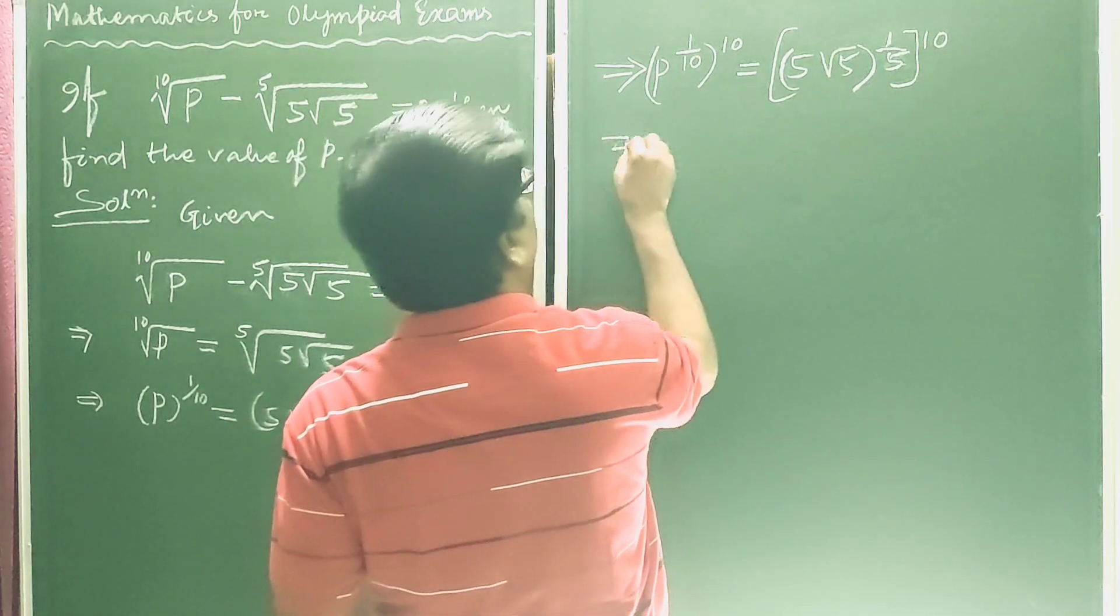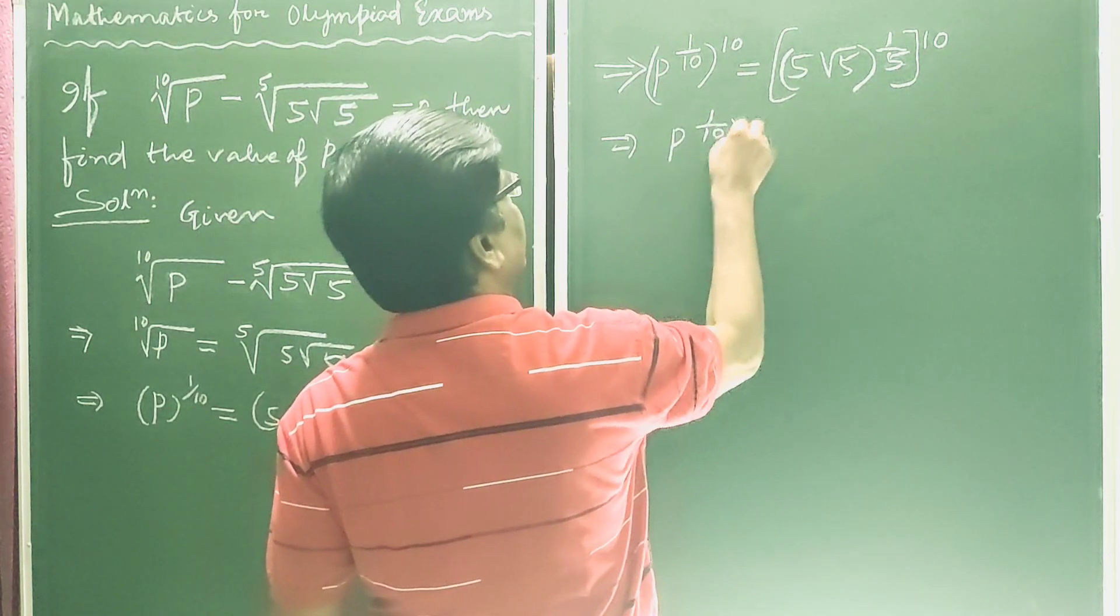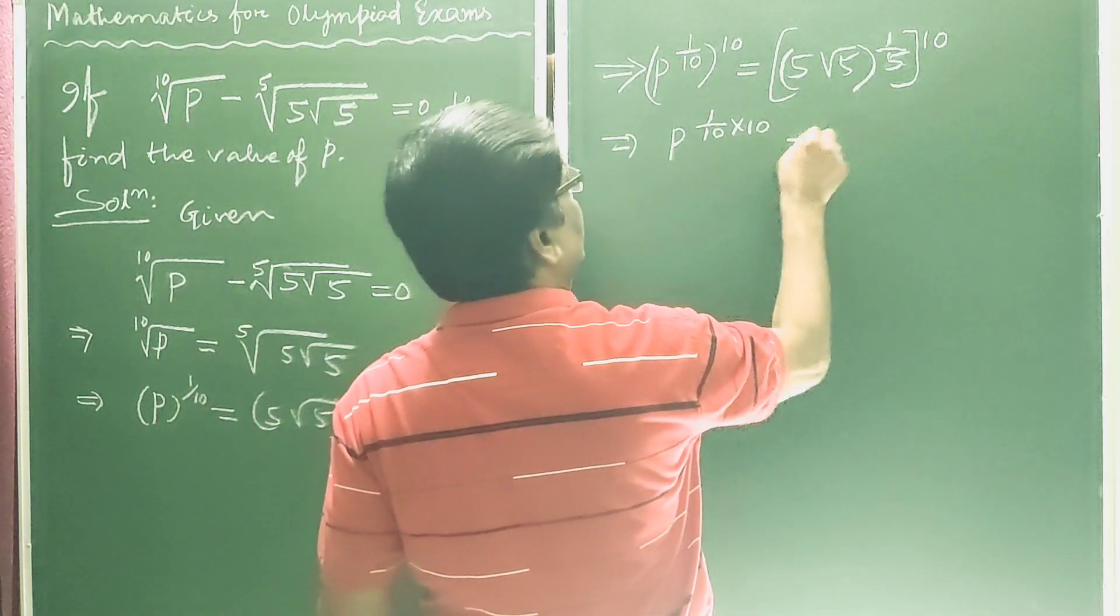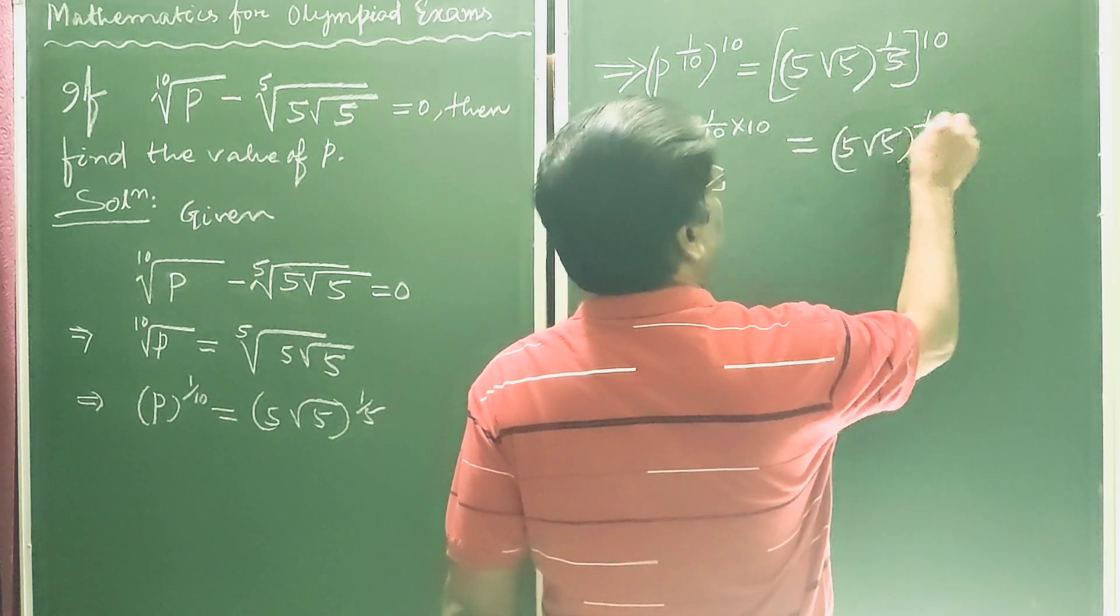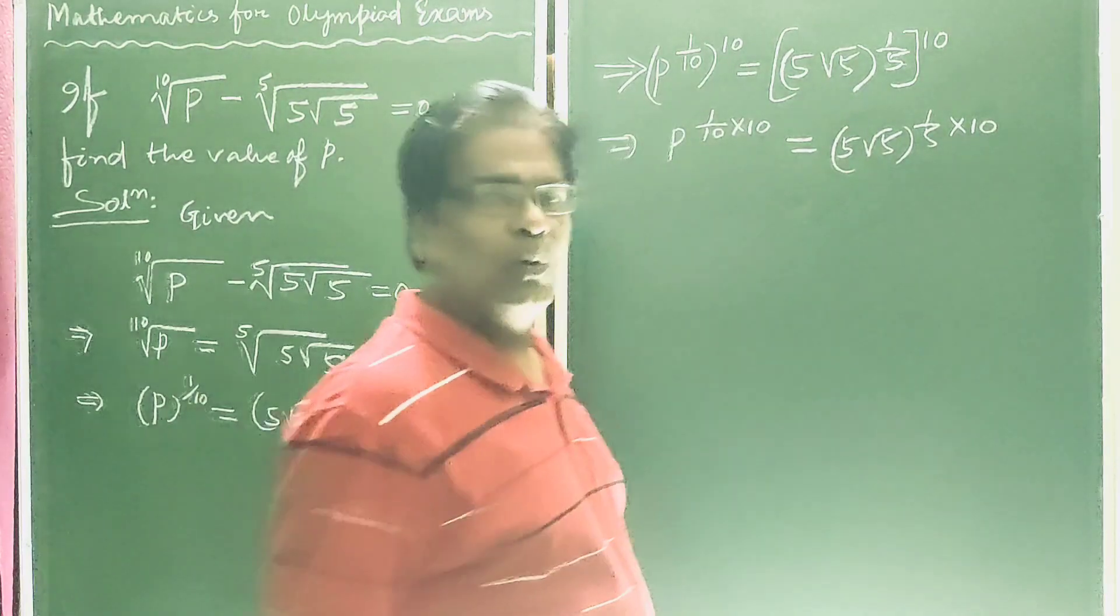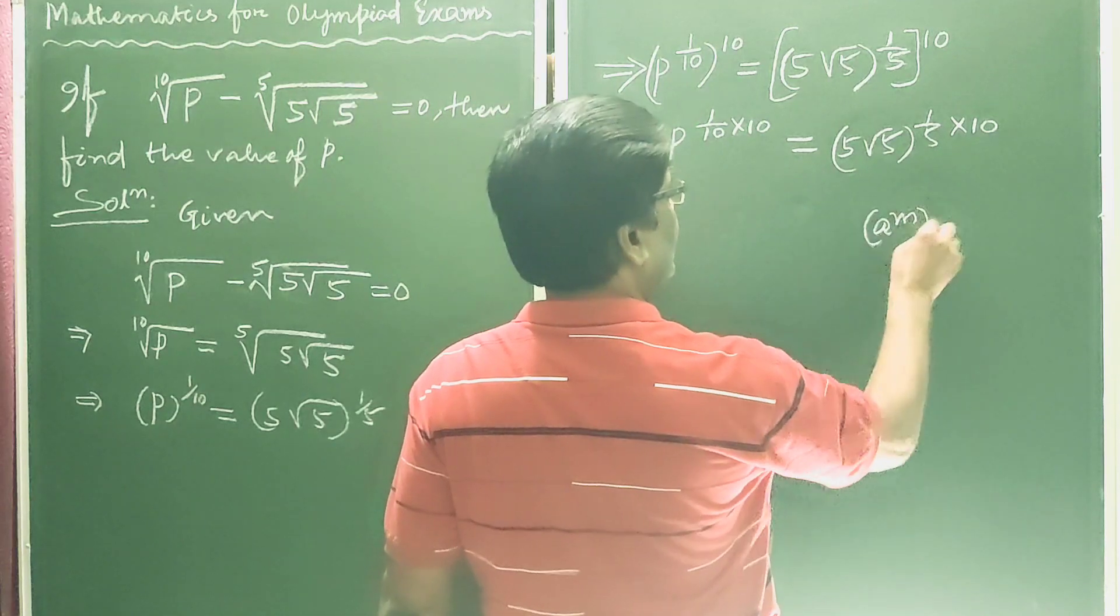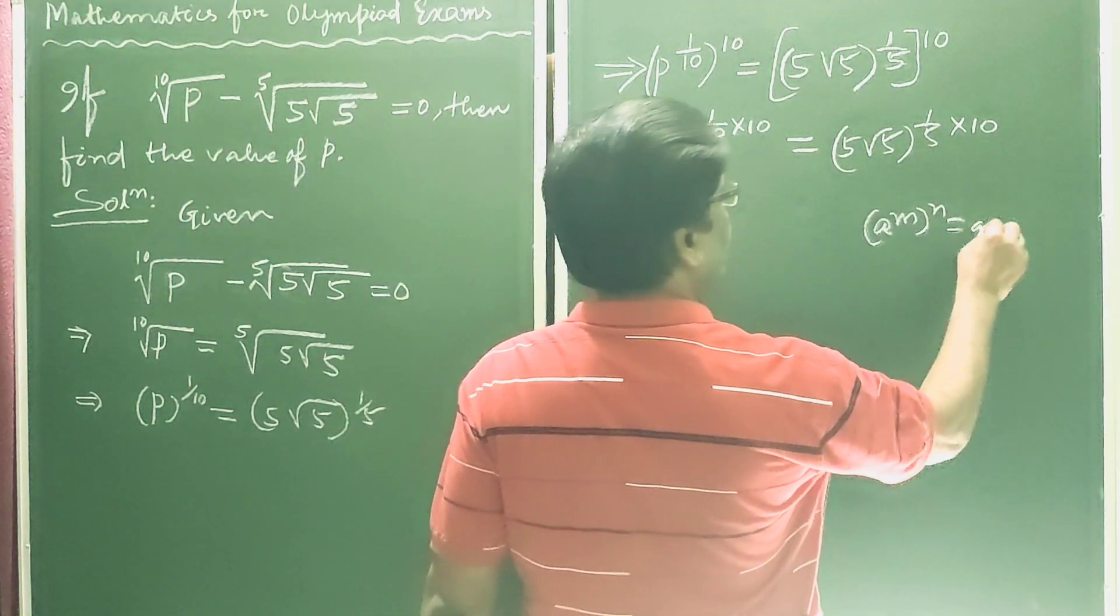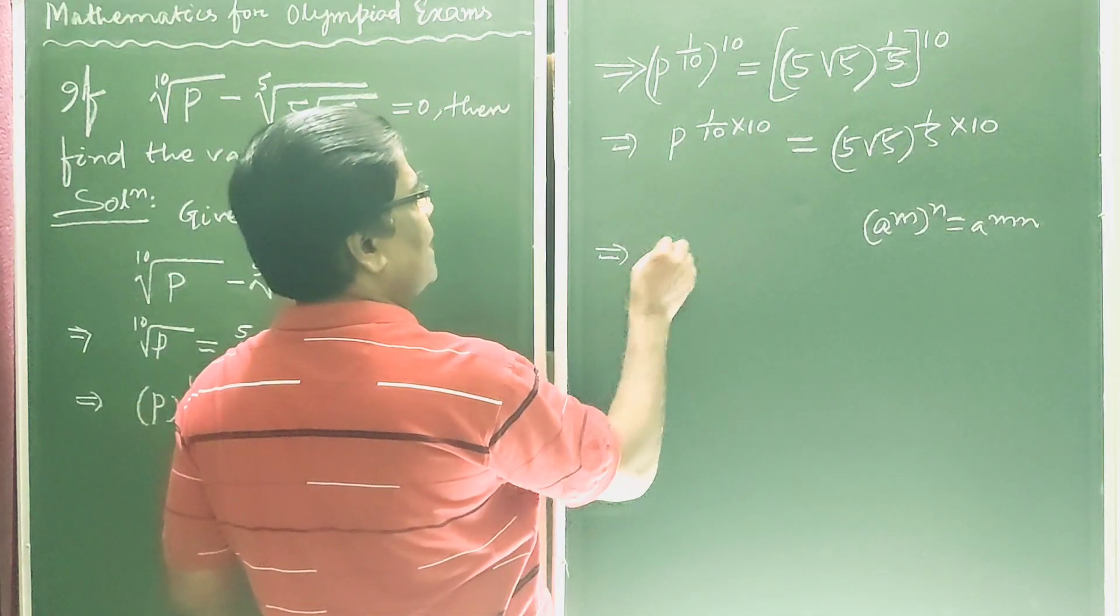So this implies p equals 5 into root 5 to the power 1 by 5 into 10. Using the exponent rule where a to the power m to the power n equals a to the power m times n, this simplifies further.